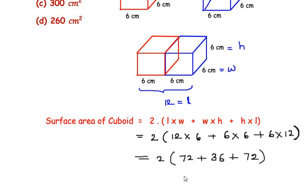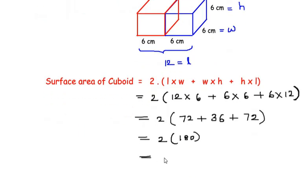Adding all the values inside the bracket we get 2 times 180, which is 360. Since this is the surface area, the unit is going to be centimeter square. So this is the surface area of the given cuboid.